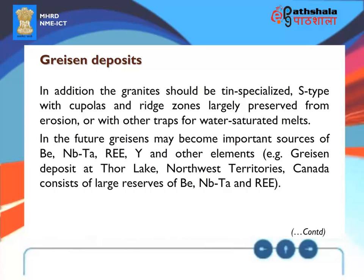Confirmation of such an area as one where late-stage crystallization occurred can be obtained by examining the variation in concentration of incompatible elements such as lithium and rubidium with height within the granite. In addition, the granite should be tin-specialized, S-type, with cupolas and ridge zones largely preserved from erosion or with other traps for water-saturated melts. In the future, greisens may become important sources of beryllium, niobium-tantalum, and rare earth elements — for example, the greisen deposit at Thor Lake, Northwest Territories, Canada, which consists of large reserves of beryllium, niobium-tantalum, and rare earth elements.